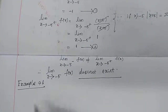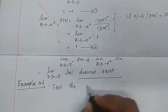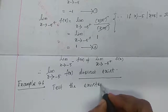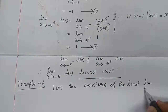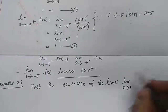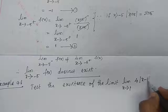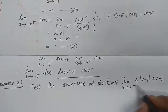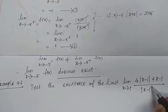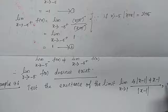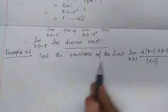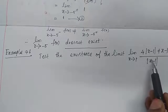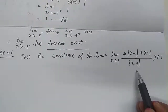Now do Example 9.6: Test the existence of the limit as x tends to 1 of [4|x−1| + (x−1)] / |x−1|, where x is not equal to 1.